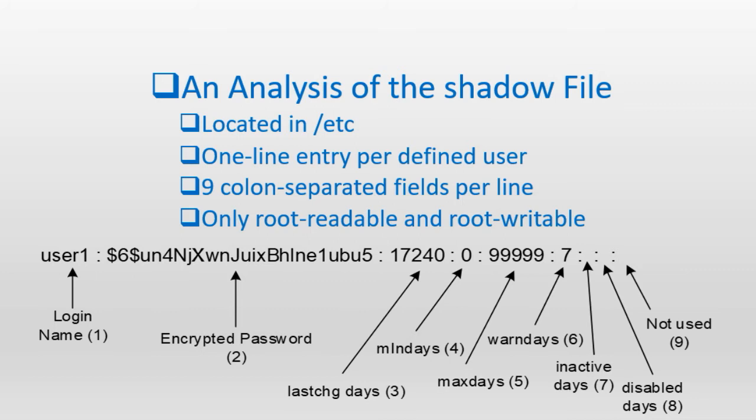The second file used during user authentication is the shadow file, which is also located in the /etc directory. This file not only stores encrypted user passwords but also enforces certain restrictions on user passwords. The user password and any restrictions placed on it are checked after the login name has been verified in the passwd file. The system allows or denies user login based on these checks.